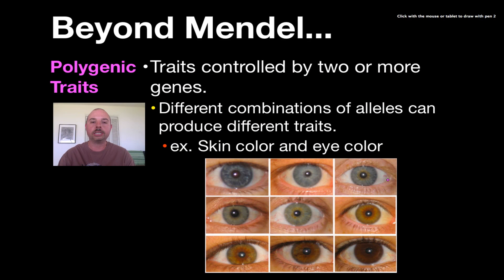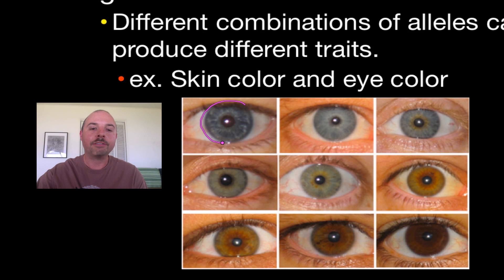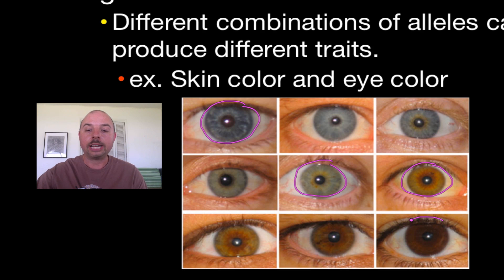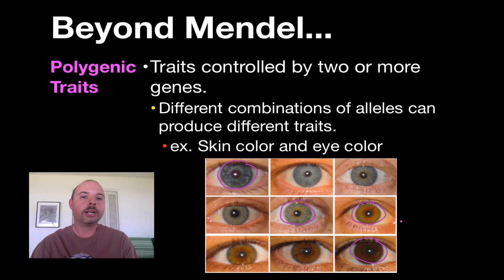Eye color is also a great example of polygenic traits. You can see individuals with fully blue eyes, greenish with brown flecks, brown with green flecks, and very dark eyes like my own. Just like skin color, eye color is controlled by more than one gene. These are all concepts that go beyond Gregor Mendel and Mendelian genetics, and I hope you found this podcast helpful.